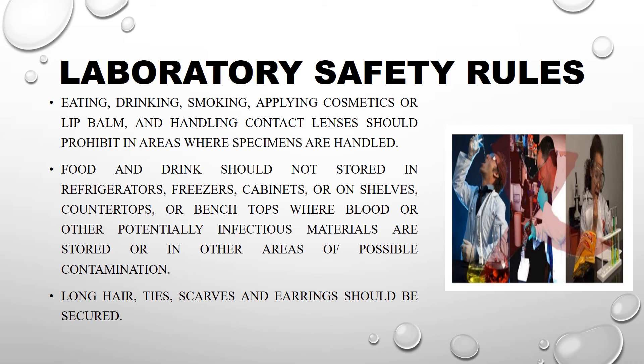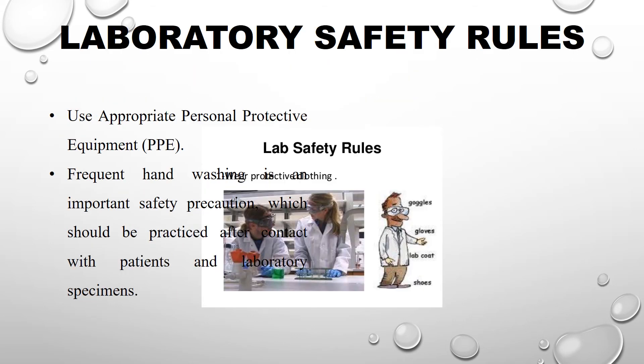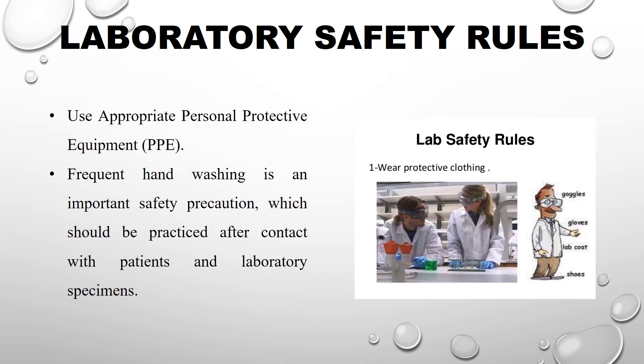Long hair, ties, scarves, and earrings should be secured. Laboratory safety rules require use of appropriate personal protective equipment (PPE). This means wearing a lab coat, goggles, and appropriate shoes. Frequent hand washing is an important safety precaution and should be practiced after contact with patients and laboratory specimens. Wear protective clothing including gloves, lab coat, and shoes.